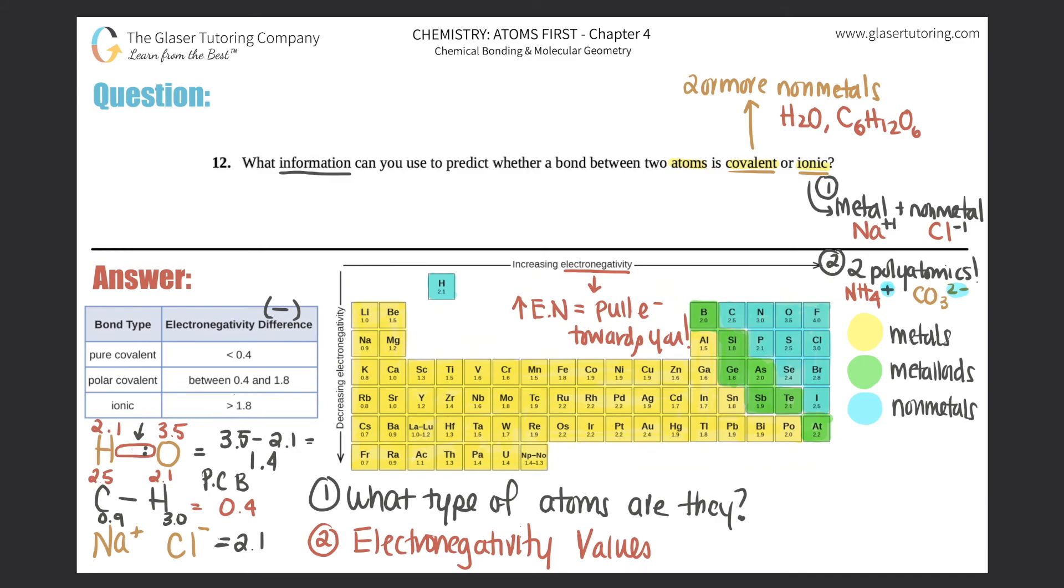So you just have to know two things. You could know the different atoms and then you can find out which one is covalent or ionic. Or if you know the electronegativity values, you can also do it from there. And that basically checks out this question. So hopefully this helped.